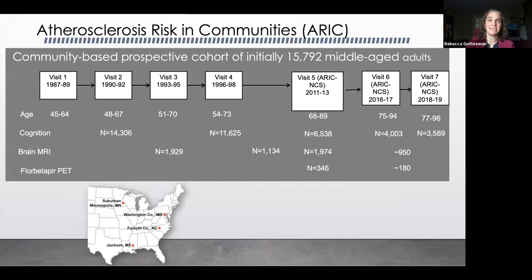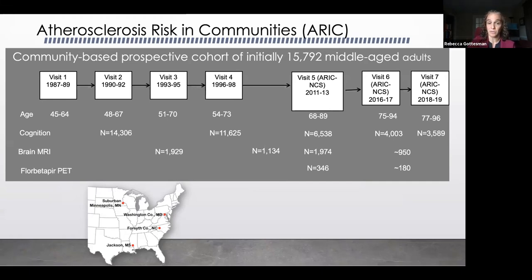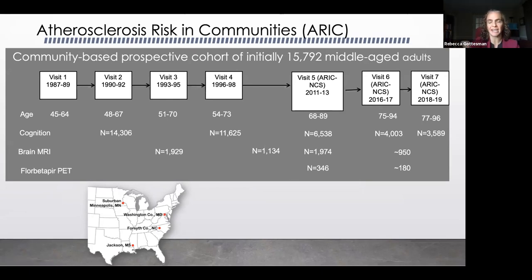To talk about the data I've worked on in this area, ARIC is the Atherosclerosis Risk in Communities Cohort — a cohort study of four communities in the US. There's one in Forsyth County near Winston-Salem in North Carolina, Washington County in Western Maryland, suburban Minneapolis, and Jackson, Mississippi. We've now completed eight in-person visits, but the data I'm going to be talking about today really focus on seven in-person visits.